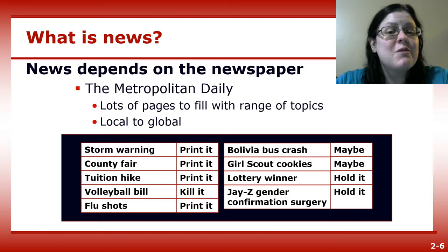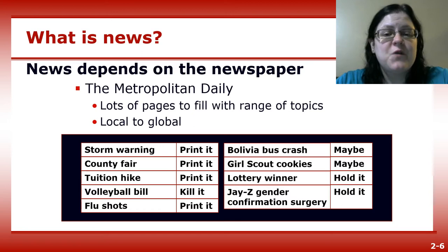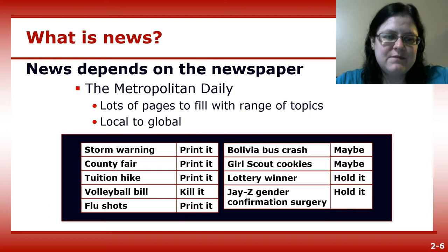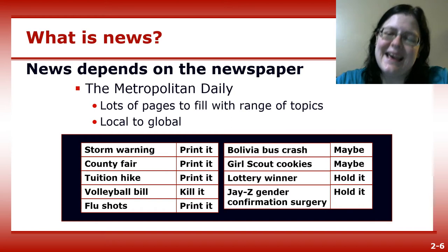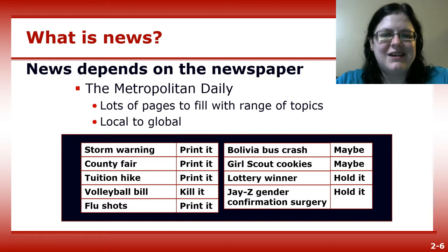News is the stories that are most interesting and important to readers. Therefore, who your readers are reflects what your news will look like. Take a look at these nine potential stories for a Metro Daily newspaper, with more details about each one found on page 34 of your textbook. Now imagine you are the editor of the Durham Herald Sun. Storm warnings and flu shots can have a large impact and immediacy, as can a tuition hike. The county fair has immediacy and novelty, and people love pictures of kids and animals, especially together.